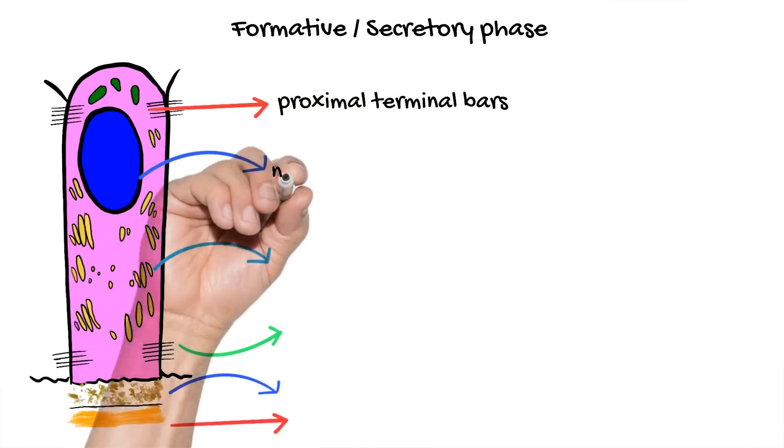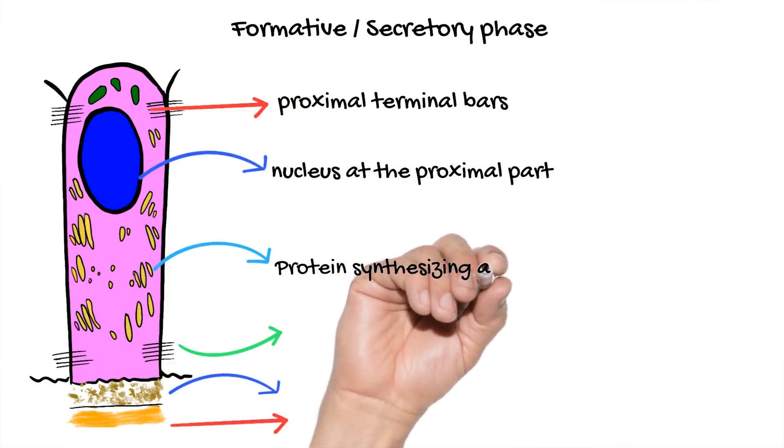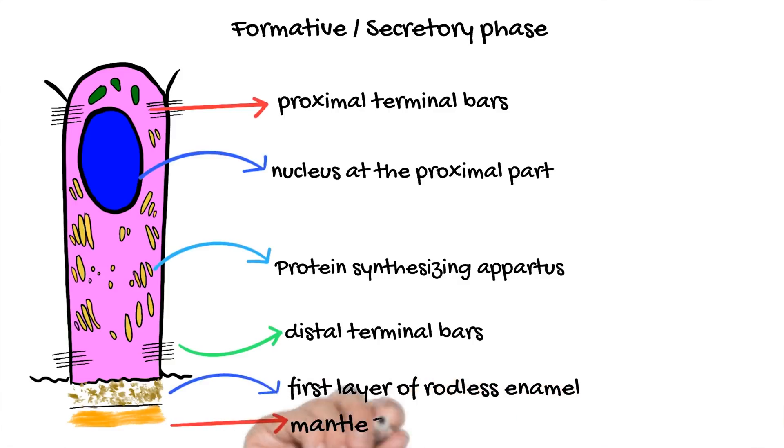The production of the enamel matrix occurs at only one side — at the distal portion of the cell body, termed the proximal Tomes' process. This initial enamel is aprismatic in nature, meaning it is not composed of the typical rod and interrod pattern; instead it is just a layer of compact calcium phosphate crystals.